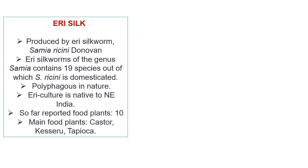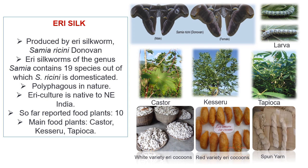Another important commercial silk variety is eri silk. The silk produced by eri silkworm Samia ricini Donovan is popularly known as eri silk. The genus Samia contains 19 species across the world, out of which Samia ricini is domesticated. The insect is polyphagous and eri culture is native to the northeastern region of India. So far, 10 eri silkworm food plants are reported; the main ones are castor, cassava, and tapioca. The eri silkworm generally produces two different colors of cocoons — white variety and red variety — and spun yarn.